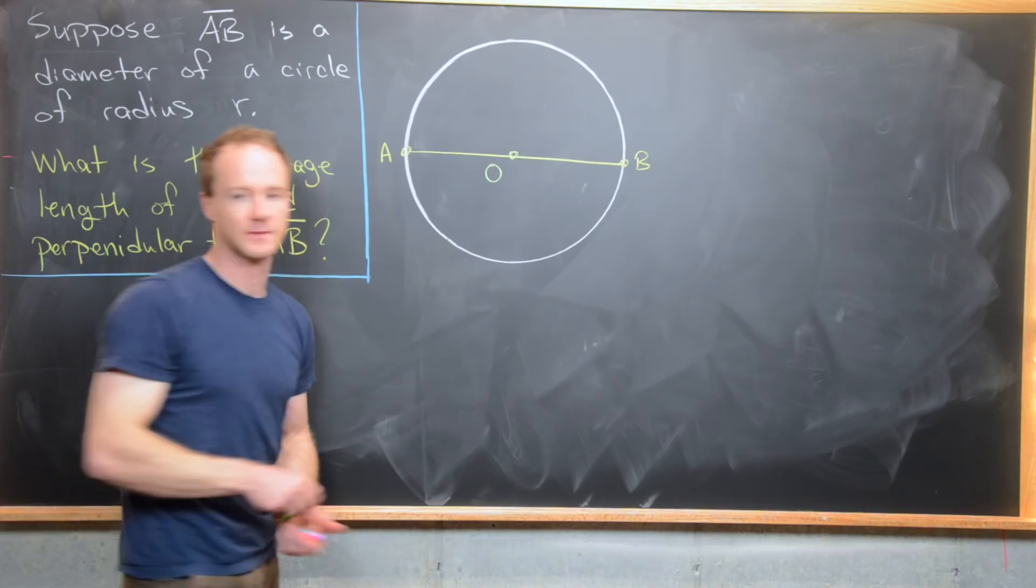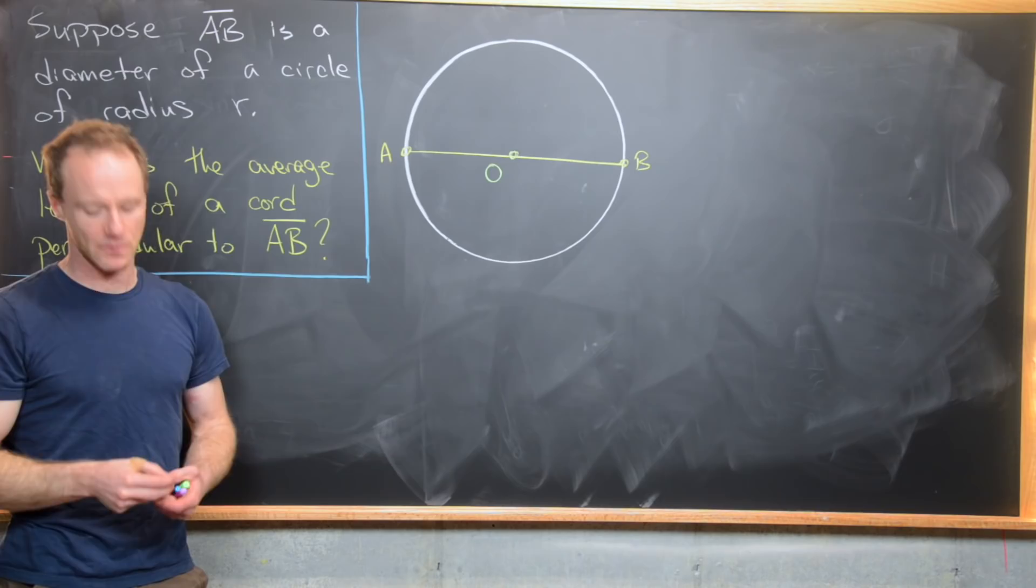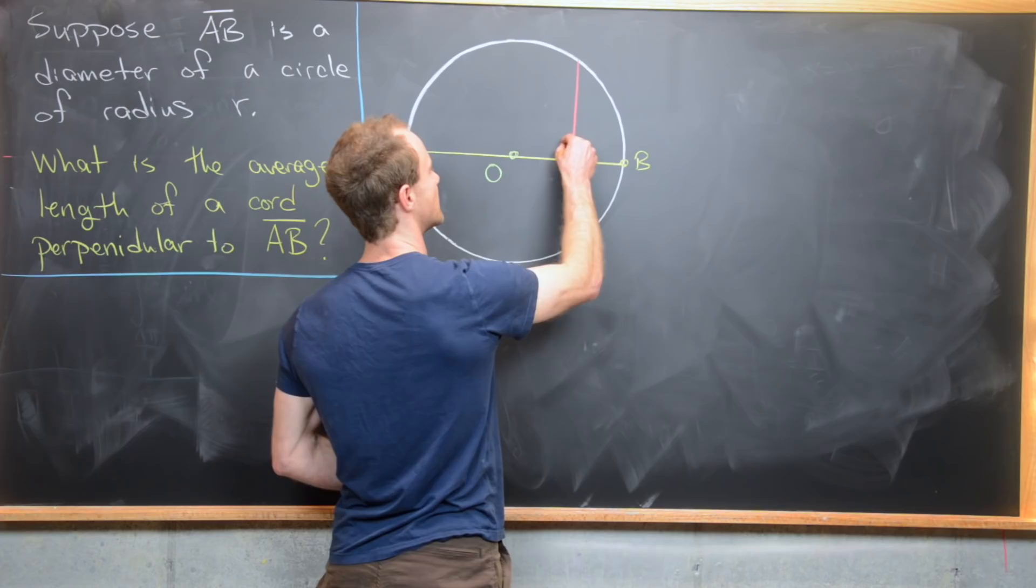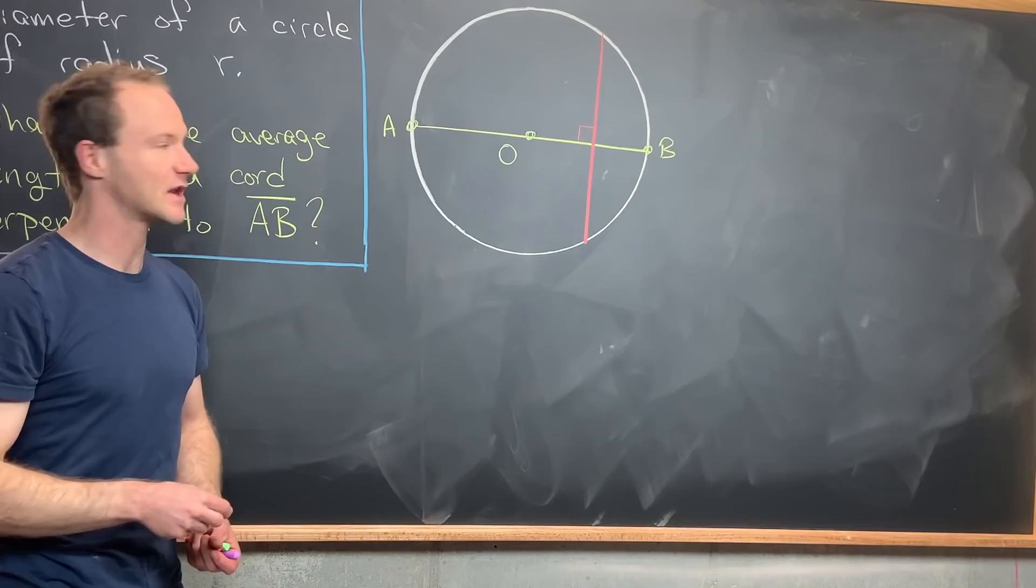So now let's look at what a chord that is perpendicular to AB would look like. So it would look something like this. The important thing is that we get a right angle right here. And so the fact that we get a right angle right there should make you think about some trigonometric things.